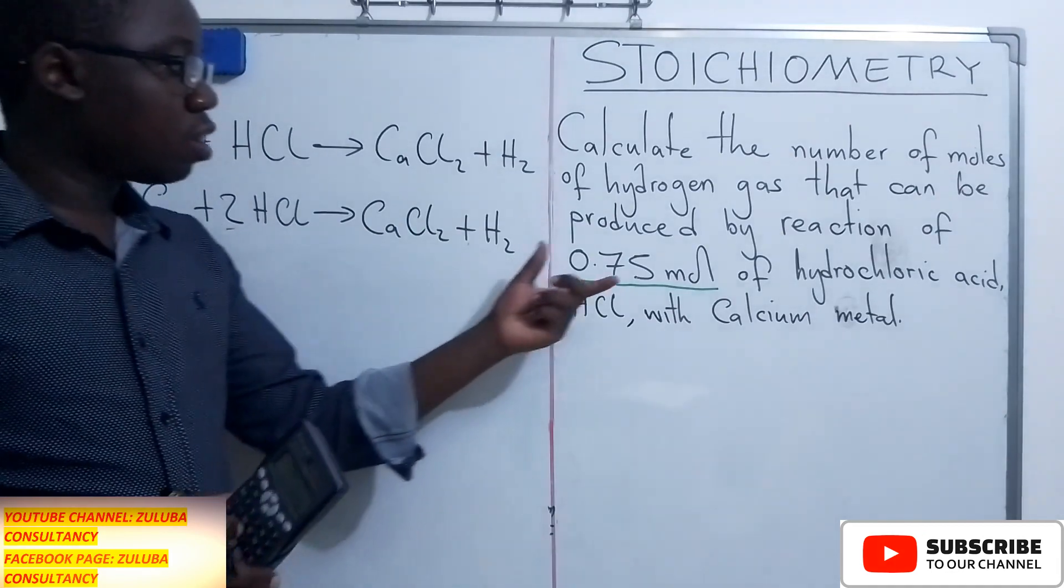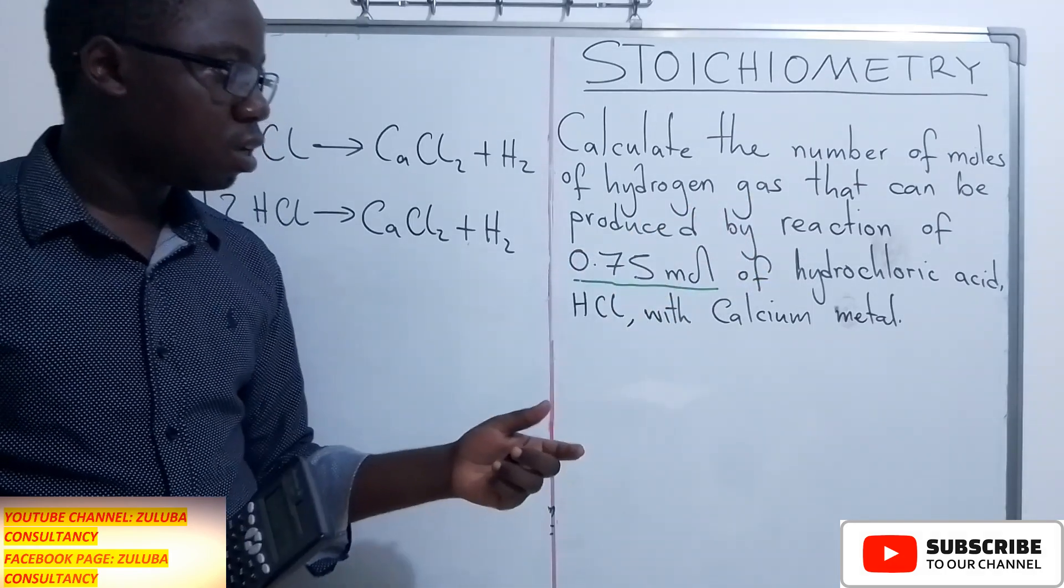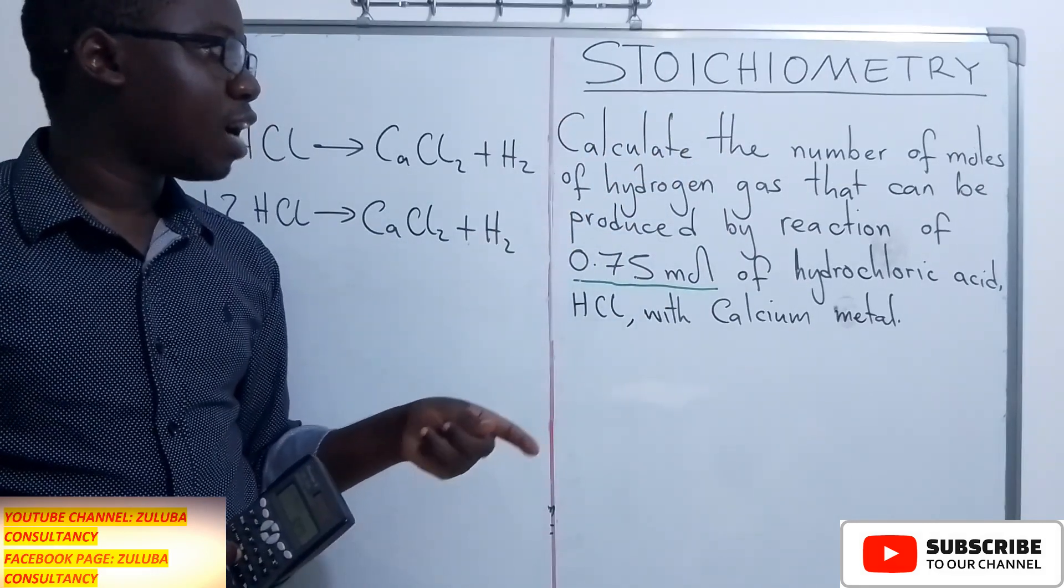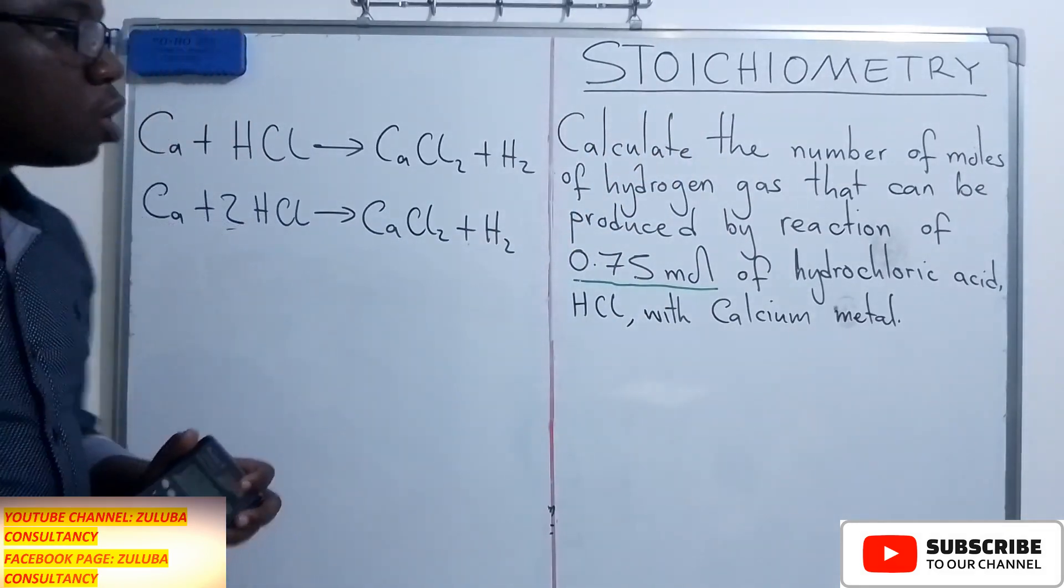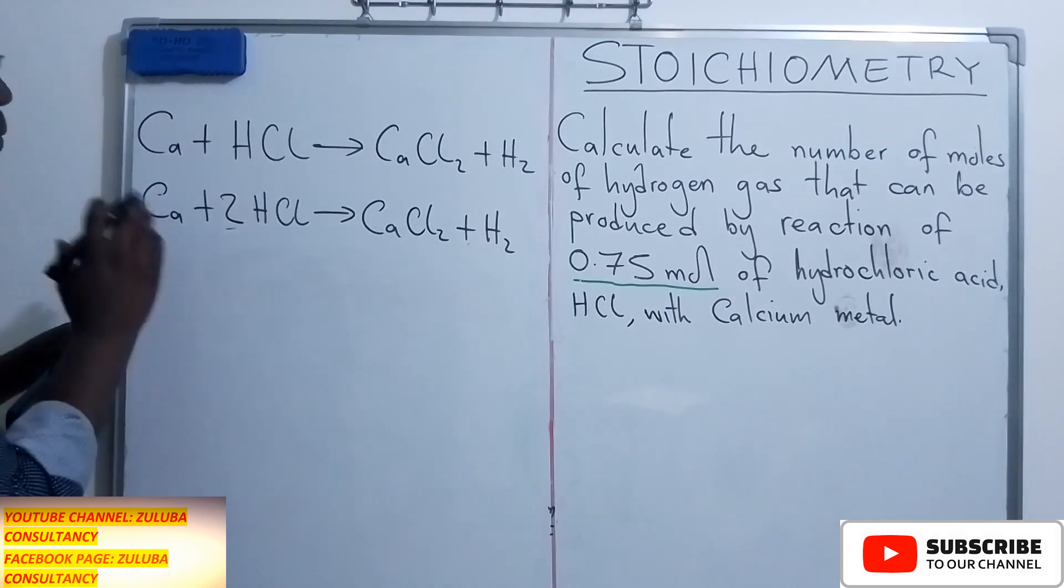you look at the number of moles that you have been given in the question of the acid. Now they want us to find the number of moles of the gas that will be produced. So this question is basically testing us to use the mole ratios.